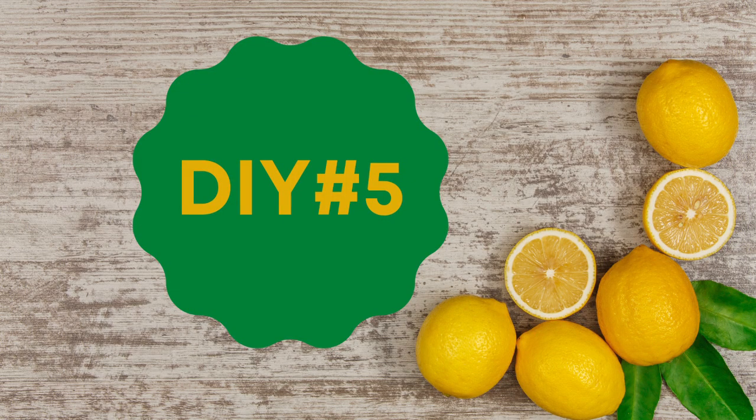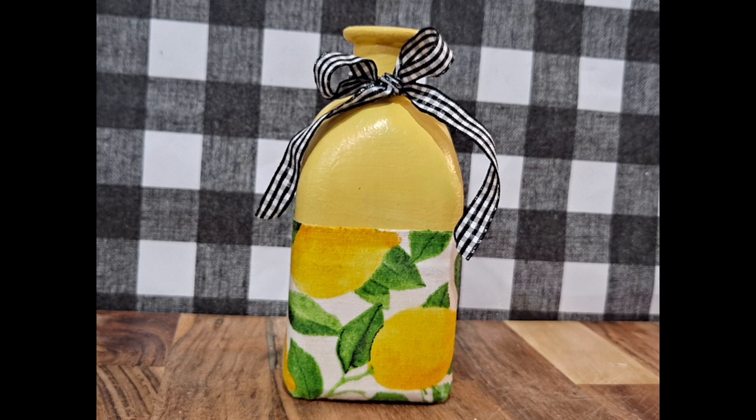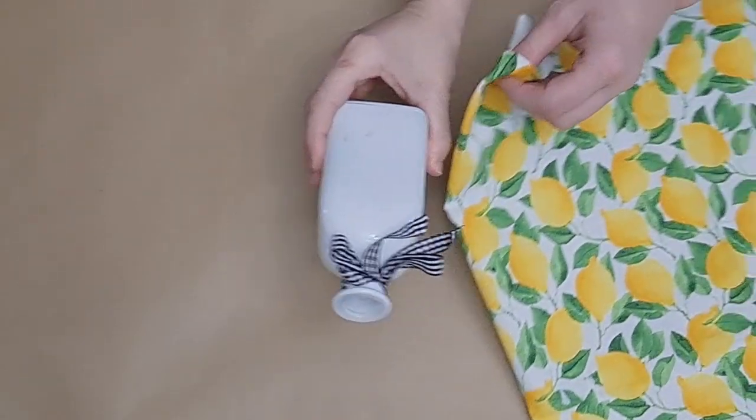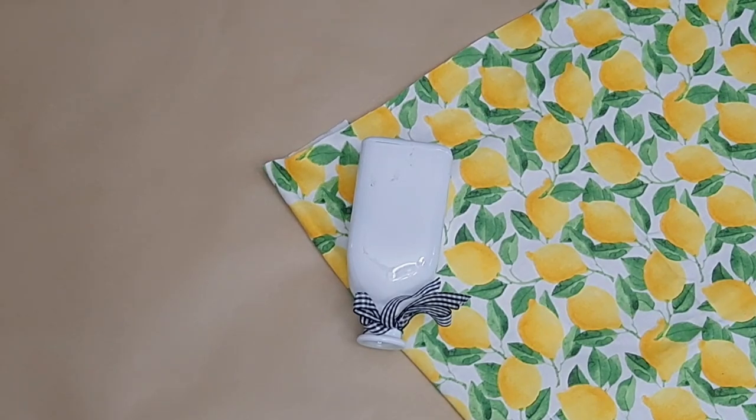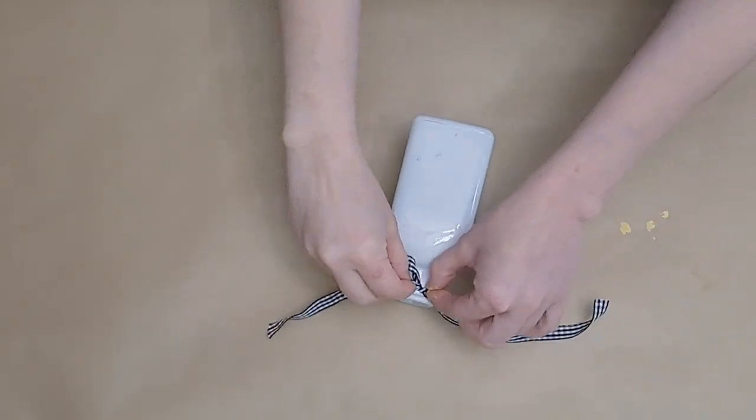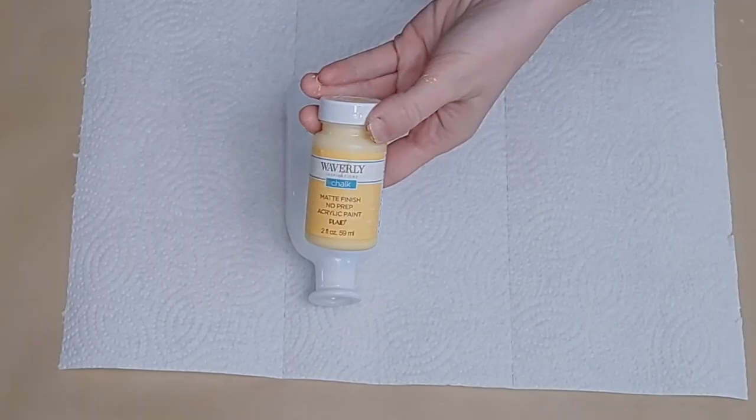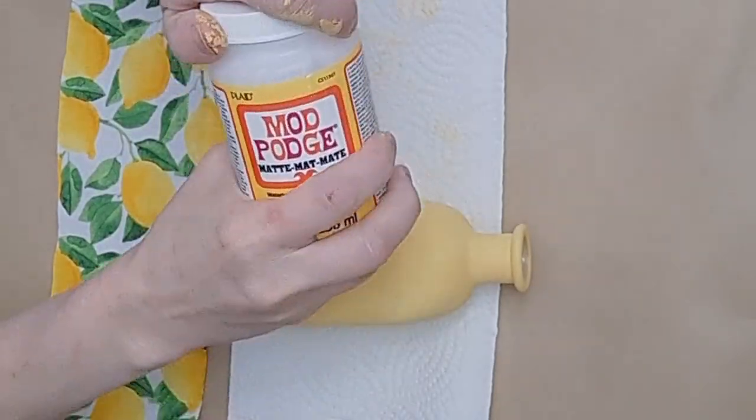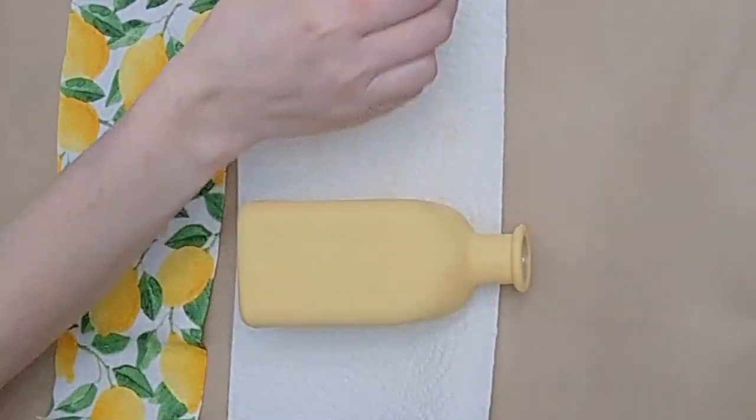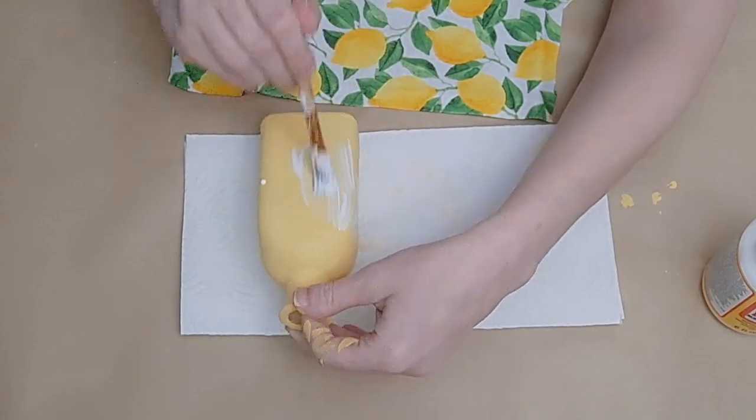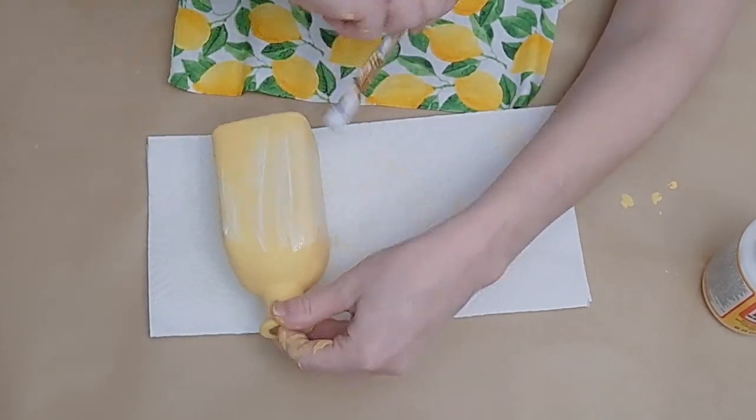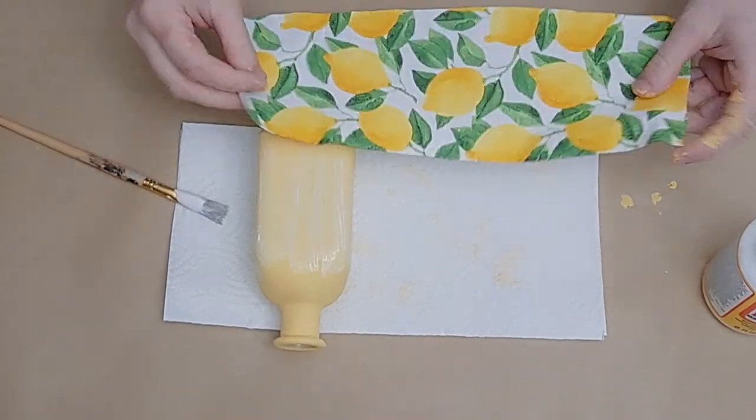Okay guys, our last and final DIY, DIY number five, super cute, super easy and adorable. I take this $1 vase from Dollar Tree. I am going to remove the buffalo check ribbon at the top and paint this vase with two coats of Waverly Maize chalk paint. I am then going to Mod Podge this very generously.